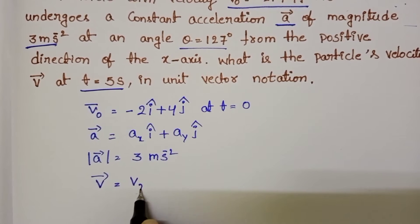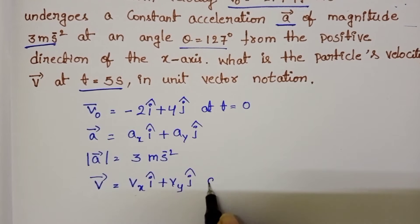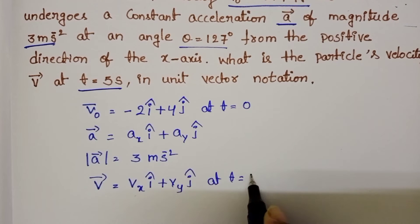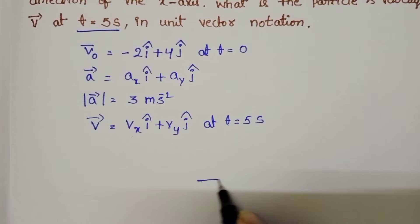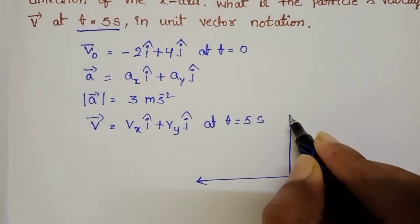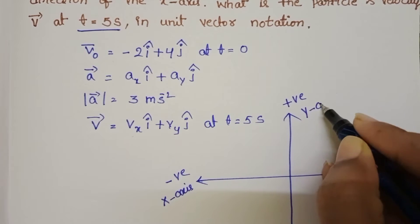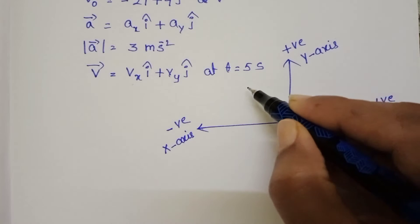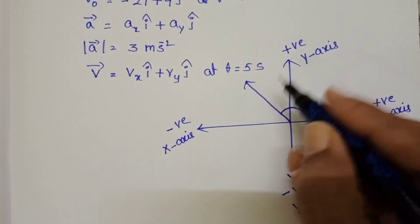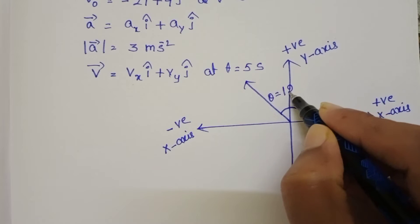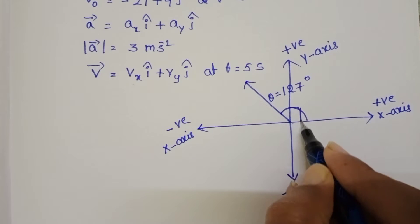V bar equals Vx i cap plus Vy j cap — this is the final velocity at t equals 5 seconds that we need to find. To solve the question, first draw the diagram.